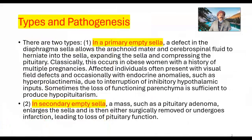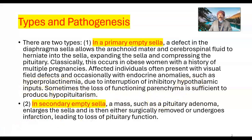There are two types. In primary empty sella, a defect in the diaphragma sella allows the arachnoid matter and cerebrospinal fluid to herniate into the sella, expanding the sella and compressing the pituitary. Classically, this occurs in obese women with a history of multiple pregnancies. Affected individuals often present with visual field defects, and occasionally with endocrine anomalies such as hyperprolactinemia due to disruption of inhibitory hypothalamic input. Sometimes the loss of function in the parenchyma is sufficient to produce hypopituitarism.